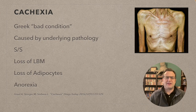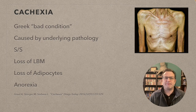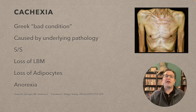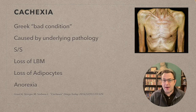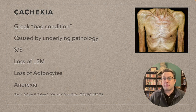Cachexia is Greek for 'bad condition' and is always caused by an underlying pathology. You'll typically see it in someone with cancer, end-stage renal disease on dialysis, or occasionally in elders with a severe injury like a hip or long bone break. Signs and symptoms include loss of lean body mass, eventual loss of fatty tissue, and anorexia — loss of appetite — which compounds the wasting.